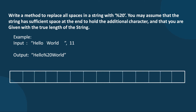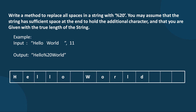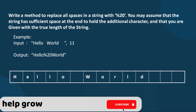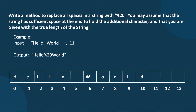Consider that we have an array of some size and we store 'Hello World' in it. The input string is converted into an array using `toCharArray()`. After converting it, the first thing we need to do is count how many spaces exist. Since we are given the true length of 11, we traverse from index 0 to 10 and count all the spaces.